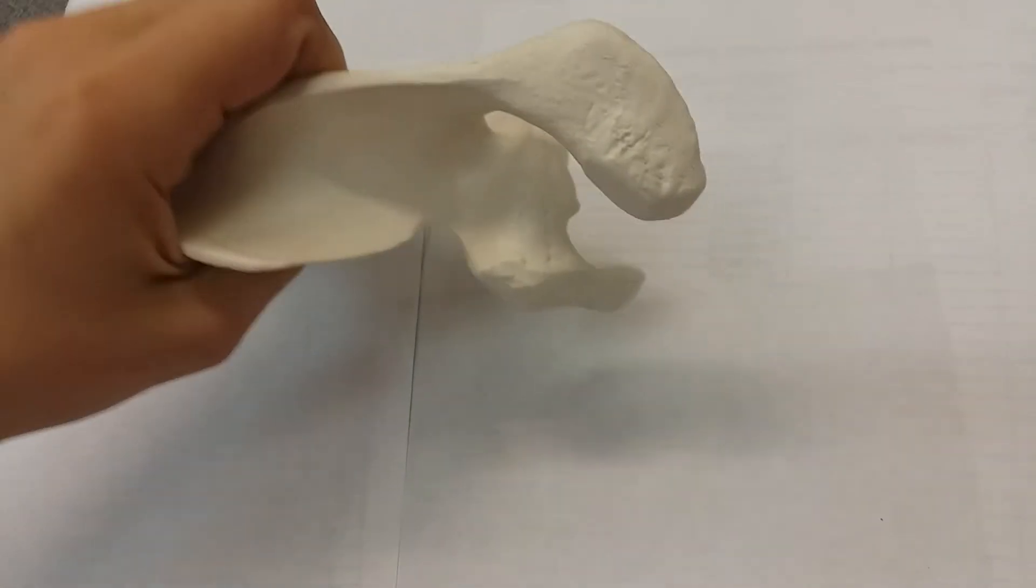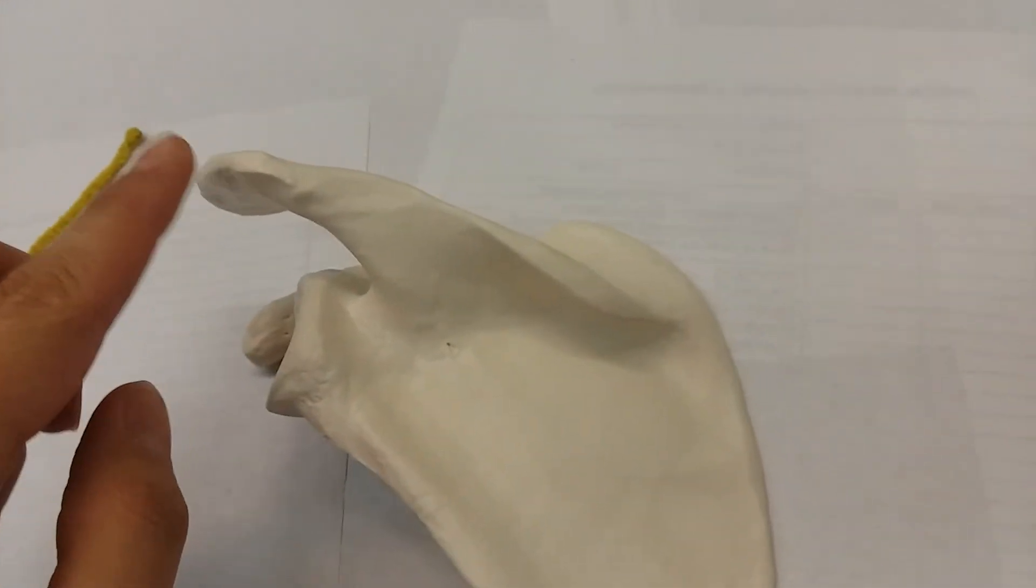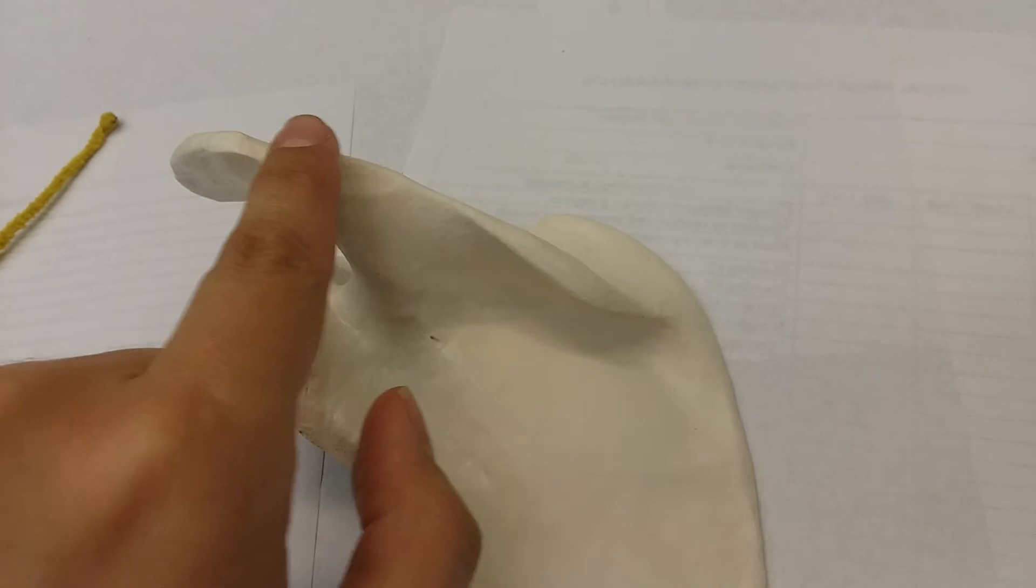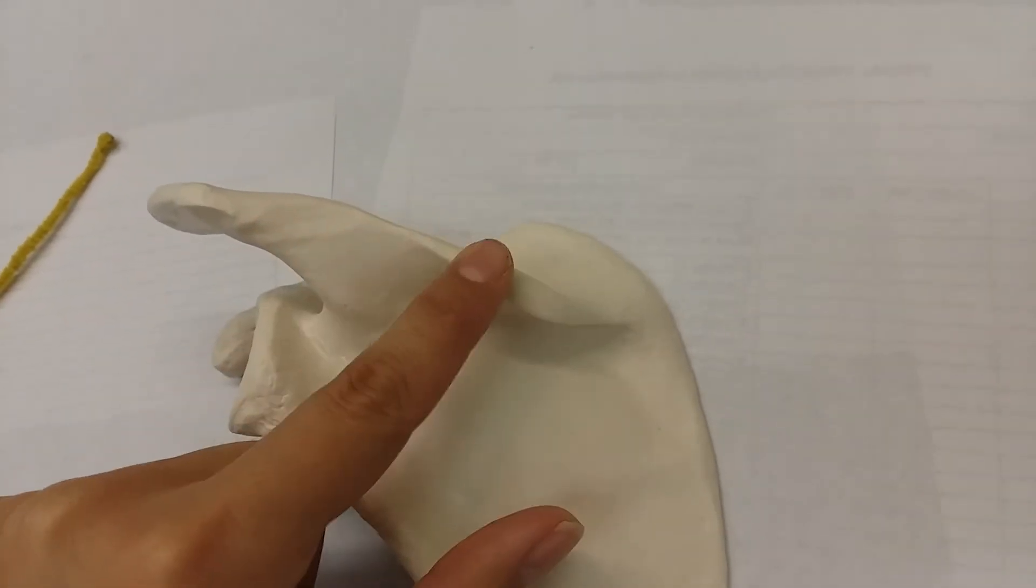There's something called the transverse process. So if we put the posterior side up, acromion process, the spine of the scapula, some people refer to this as the transverse process.